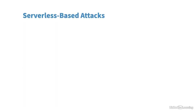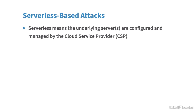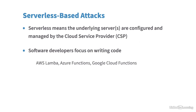Serverless-based attacks target environments where the underlying servers are configured and managed by the cloud service provider automatically — you don't have to manually deploy VMs and configure software. Software developers can focus on writing code rather than installing servers. Examples of serverless solutions include AWS Lambda, Azure Functions, and Google Cloud Functions. Auto-scaling can be enabled when code requests get busy, automatically adding underlying services to handle peak workload.